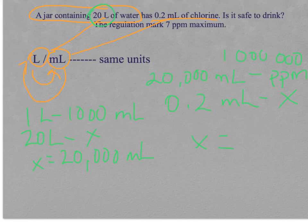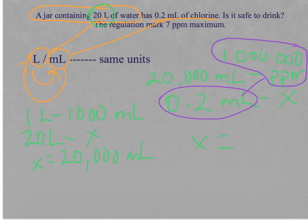Do the calculation. You need to multiply 0.2, the cross numbers, which is 0.2 times 1 million, and then divide it into this one. And you will get 10 parts per million. That is the concentration of chlorine.